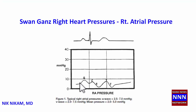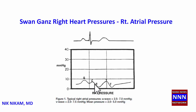The A wave represents the right atrial contraction. As the right atrial contraction reaches a peak and slowly relaxes, we see a slight descend in the waveform. Following that, we have a slight positive deflection known as the C wave, which corresponds to the tricuspid valve closure.